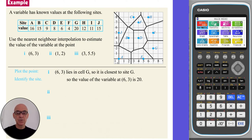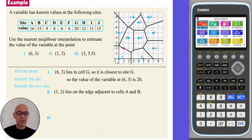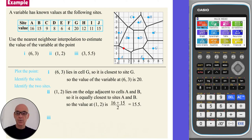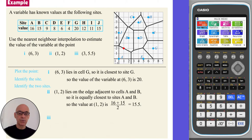In part 2, plotting the point (1, 2), we see that it lies on the edge adjacent to cells A and B, so it is equally closest to sites A and B. So we estimate the value of the variable at this point by averaging these two values, giving 15.5.